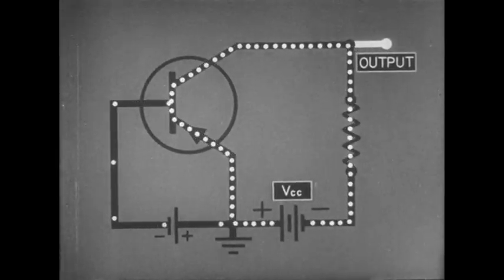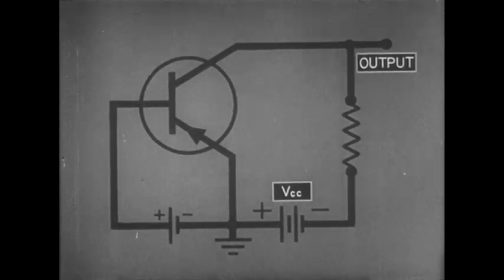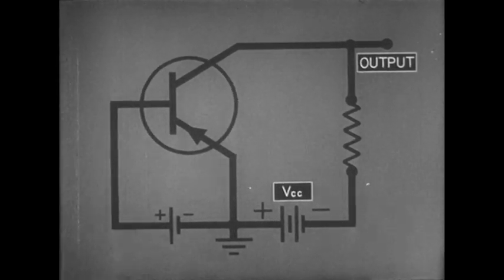When the input signal is reversed, the emitter is reverse biased, so there is no current flow. The switch is off.